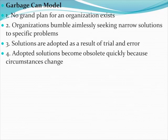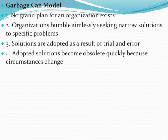The garbage can model is radically opposed to the rational choice model. This is the model of muddling through, where bureaucrats try to come up with specific solutions to specific problems, one circumstance at a time. There is no grand plan for an organization. Organizations bumble aimlessly, seeking narrow solutions to specific problems. Solutions tend to be adopted through trial and error — you try something, it doesn't work, you throw it away. Finally you find a solution that works, but soon thereafter the solution stops working because circumstances change, and the whole process starts again.